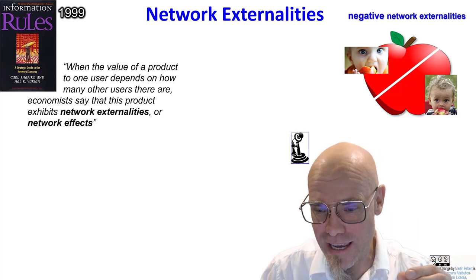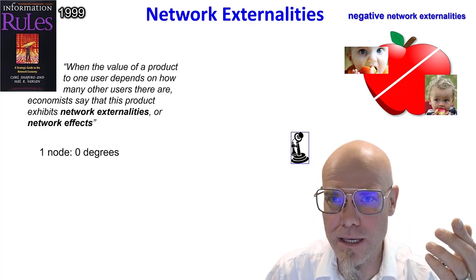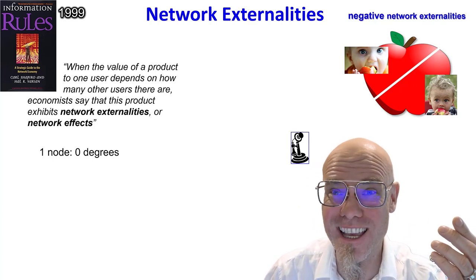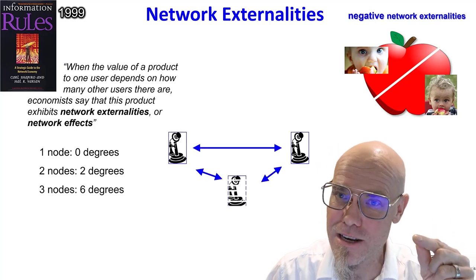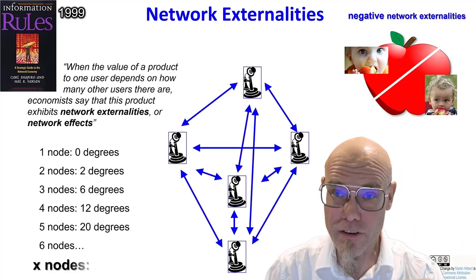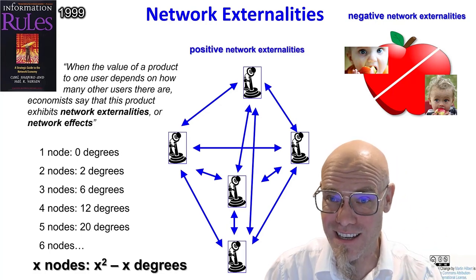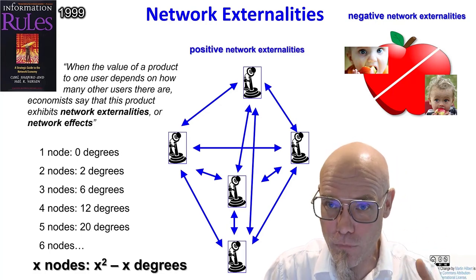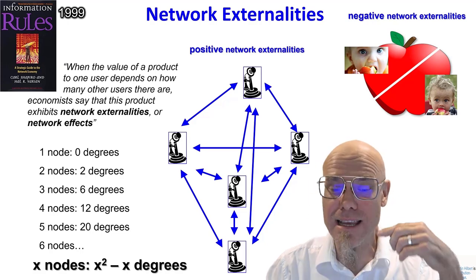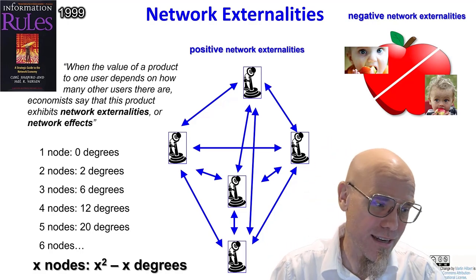In the digital age, if you only have one person in a network, who do you want to call? So the more people you have in the network, the more value you get. That is very interesting for economists — they still don't fully process it. It's: the more you have, the more value each one gets, and they get exponentially more value. That's called positive network externalities.